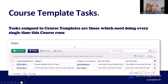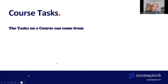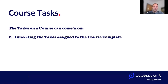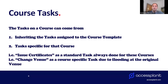Within the platform, these are tasks you need to do for every single course — you assign them to the course template, and they then create automatically on each course date. You can also create tasks per individual course date for things specific to that date, such as issuing certificates or changing the venue — for instance, if flooding is happening at the original venue and you need to set a task to change that venue for that specific course.